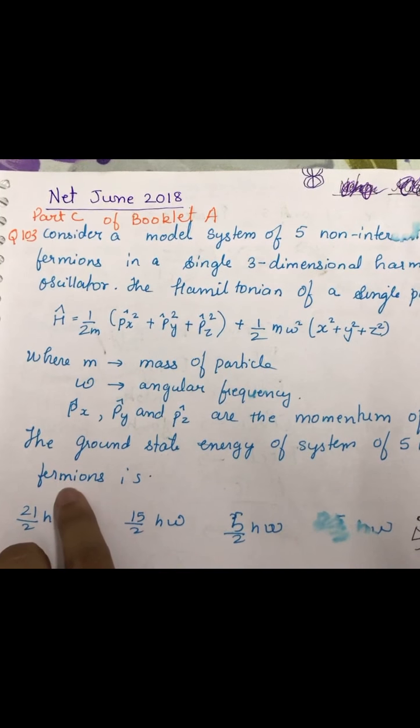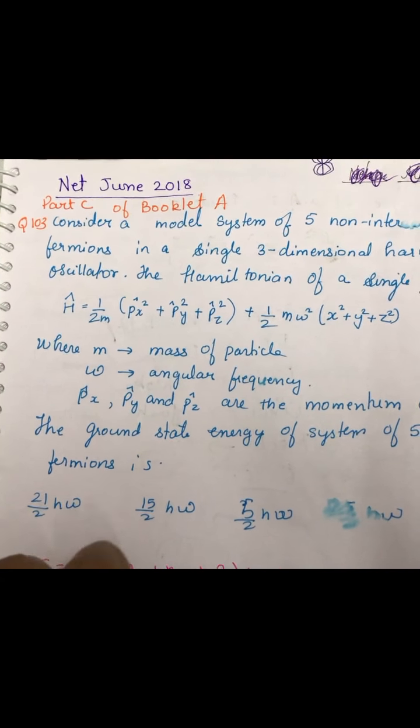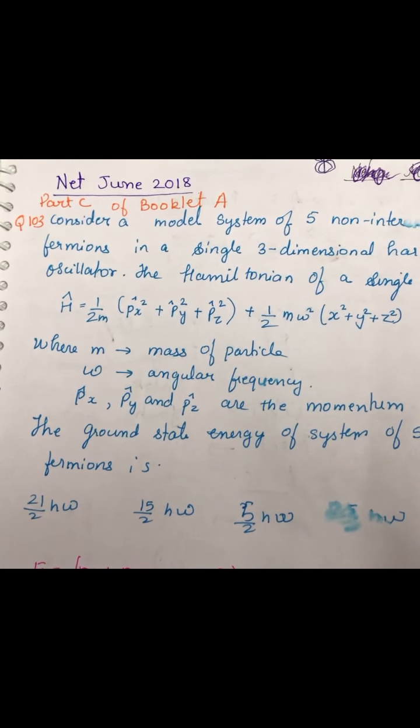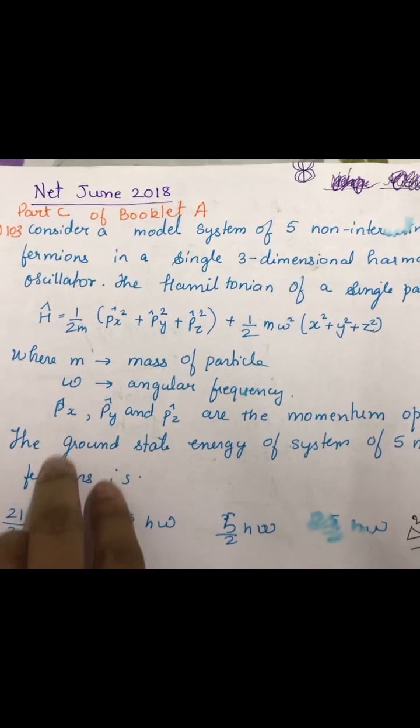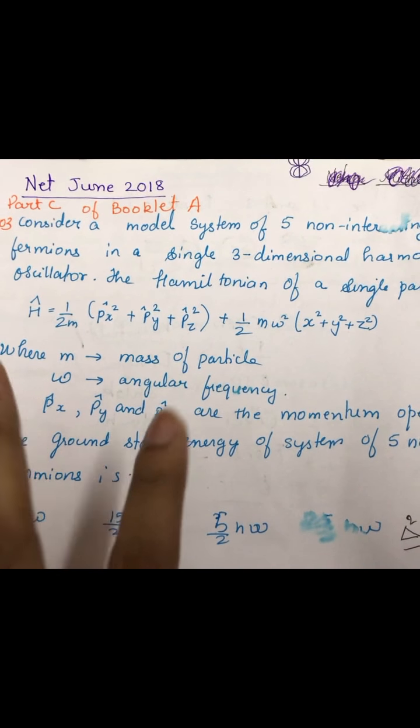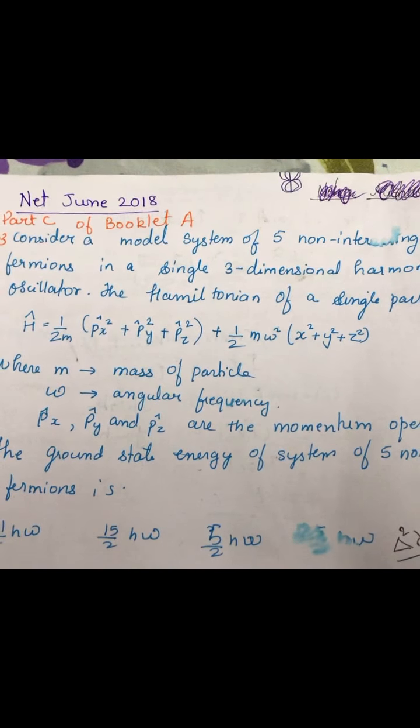First we need to understand what do you mean by fermions. Fermions is nothing but the particle which has got spin, that is plus half or minus half. So we have got five fermions, that means five plus half and minus half, five spin, five particles which have got spin number.